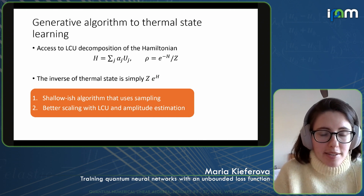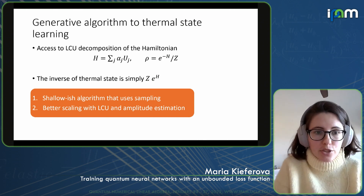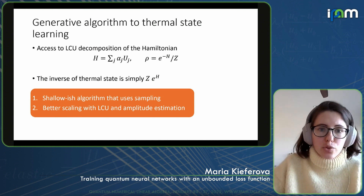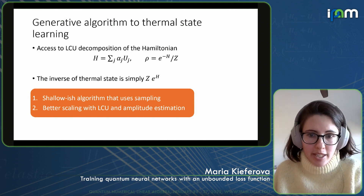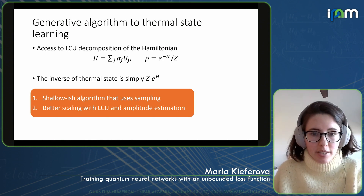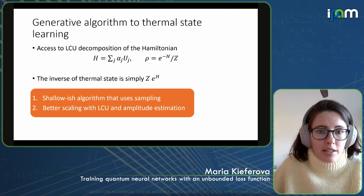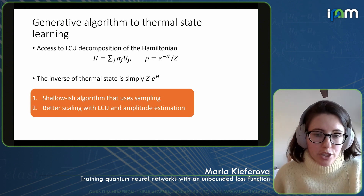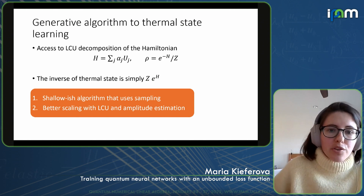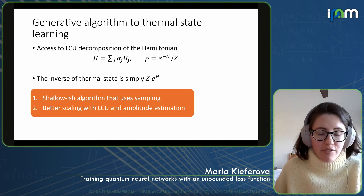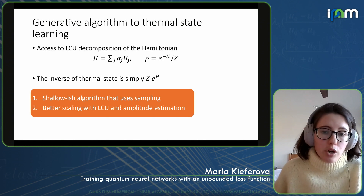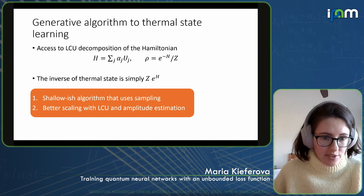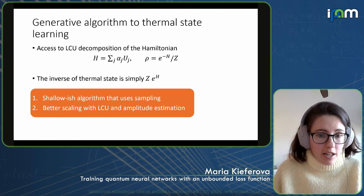We can say that creating thermal states can be hard, but for many physical systems thermalization takes place naturally, especially for thermal states at higher temperatures. The reason we chose thermal states is that instead of having access to thermal states directly as a training set, we allow our algorithm only access to an LCU decomposition of the Hamiltonian. So the Hamiltonian that defines the thermal state — we have access to the individual terms U_j through an oracle, and we also have access to the coefficients alpha. In this case, computing the inverse of the state would be easy, at least formally.